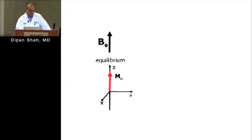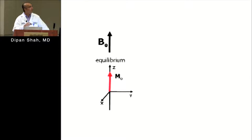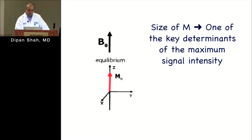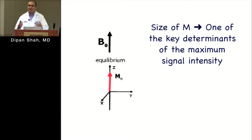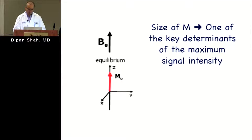In the resting equilibrium state, protons are lined up in the net positive direction — aligned with the magnetic field. At equilibrium, B-naught equals M-naught: the static field equals the local field the protons experience. The size of M-naught is a key determinant of maximum signal intensity. At higher field strength, B-naught is higher and M-naught is higher, which is why higher field strengths give higher signal-to-noise.